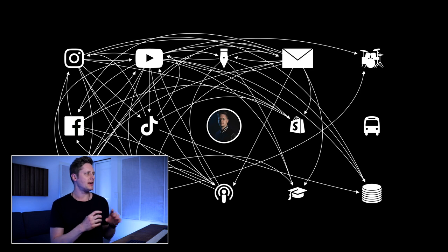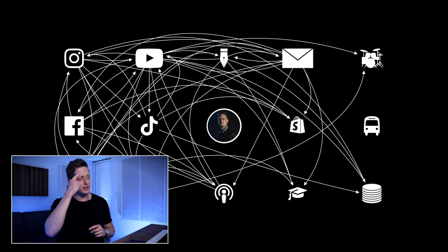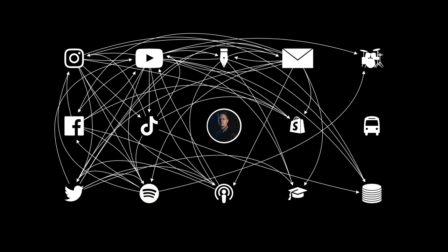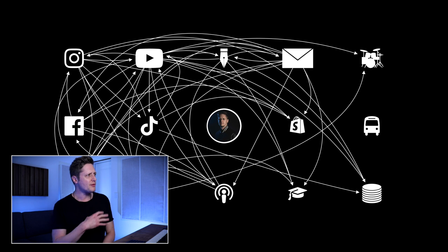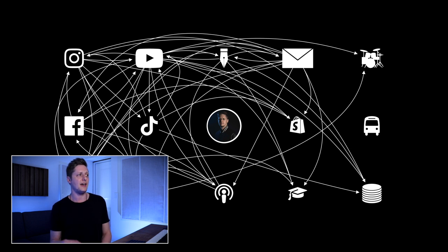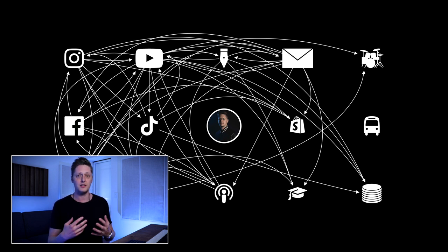There's a lot of information on this page, but if you look at any given icon or platform and trace it out, you can follow where things are happening. Instagram, for instance, is driving traffic to Twitter, Spotify, YouTube, TikTok, my podcast, and Shopify. YouTube is the biggest hub I have and it's driving traffic pretty much everywhere. Touring is siloed out by itself — it doesn't drive traffic anywhere. I have it listed only because it's a revenue stream, not because it's a core part of the business I'm actively building.